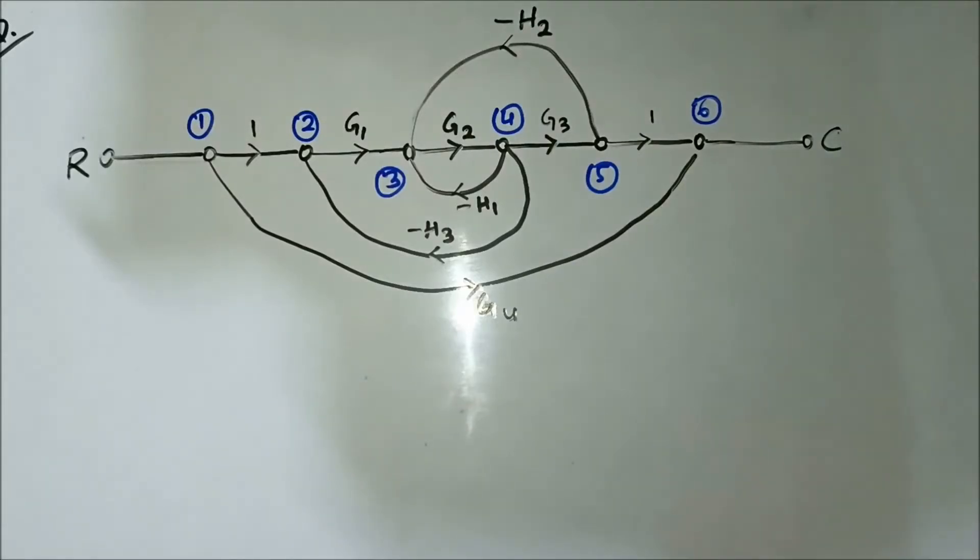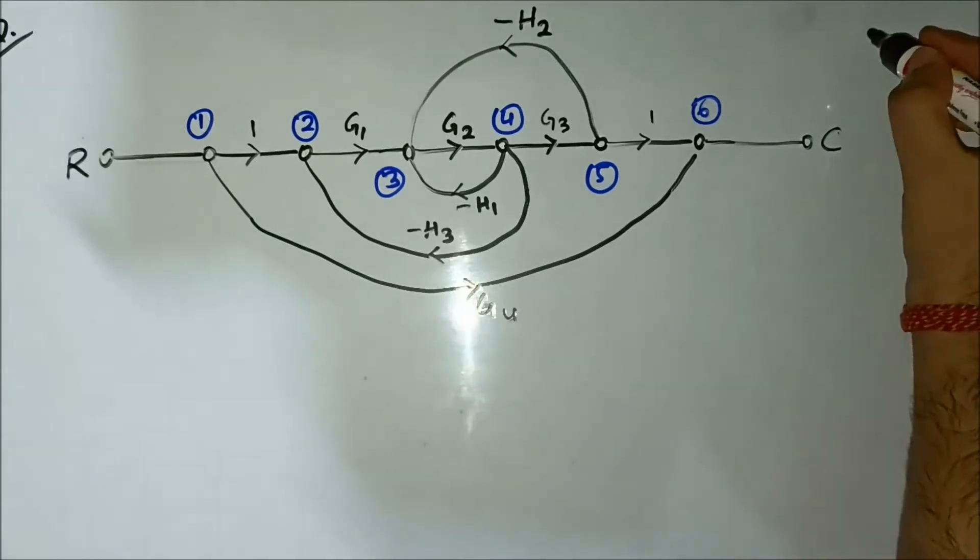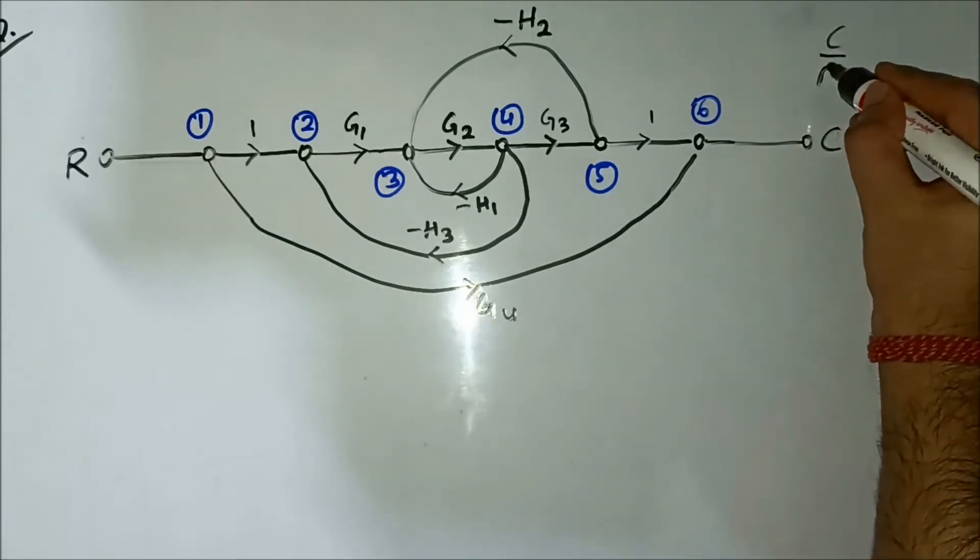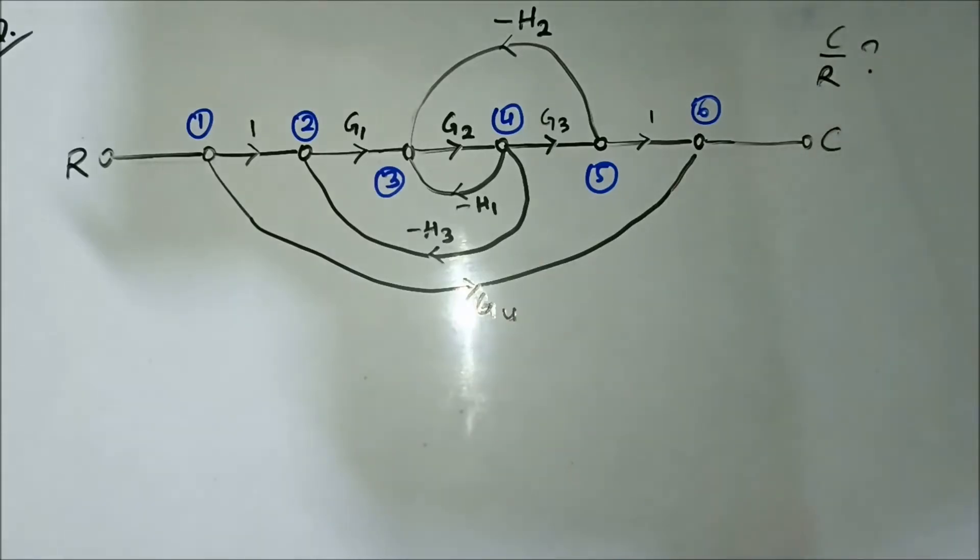Hello friends, we'll continue our discussion related to signal flow graphs. So far we have discussed several questions, and in this video we have a signal flow graph where we have to find out the transfer function. I'll be using the Mason's gain formula approach like we have done in the previous questions.